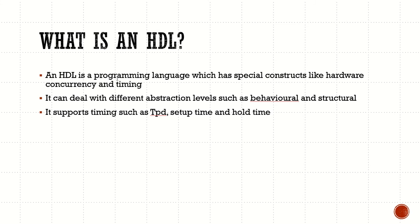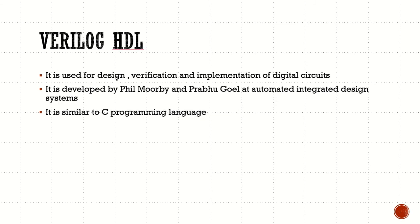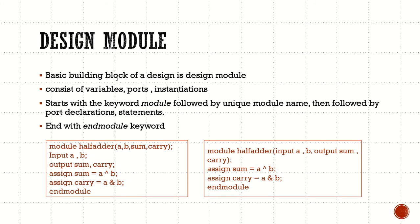Now we go into the main topic: what is Verilog HDL and why is it used? It is used for design, verification, and implementation of digital circuits. It was developed by Phil Morby and Prabhu Goyal at Automated Integrated Design Systems. It is similar to the C programming language with added constructs.